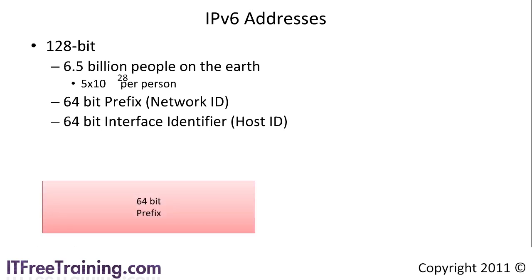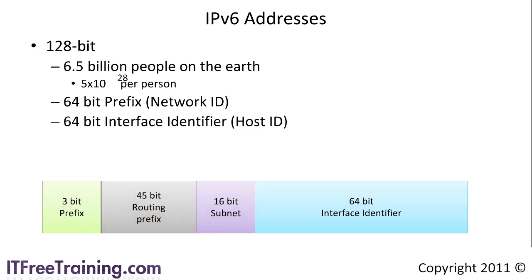The 128-bit address is broken down into two parts: the first 64 bits is the network prefix and the second 64 bits is the interface identifier. The network address is divided up into three parts. First the prefix, then a 45-bit global routing prefix which is unique to the network it is on. The last 16 bits can be allocated by the ISP or individual however they like for subnetting. For each public IP version 6 address, there are 16 bits for networks, or over 65,000 networks available. By having a fixed subnet like this, you no longer have to worry about doing binary conversions to work out subnetting like you did in IP version 4.